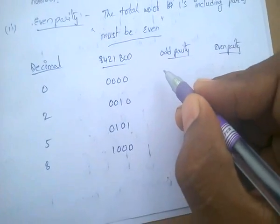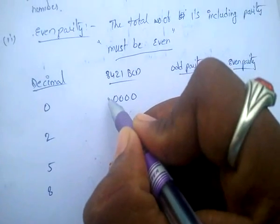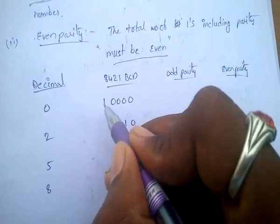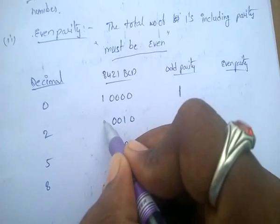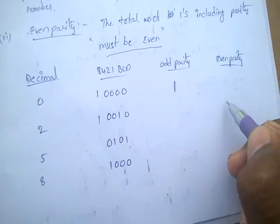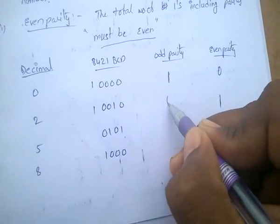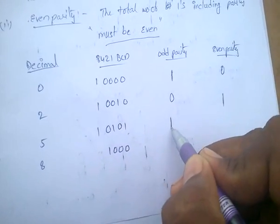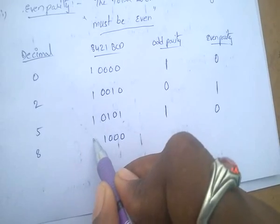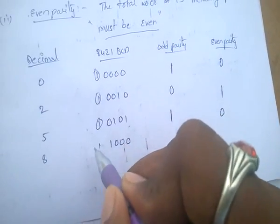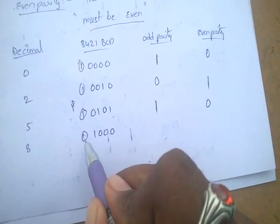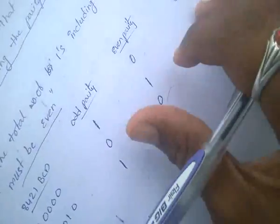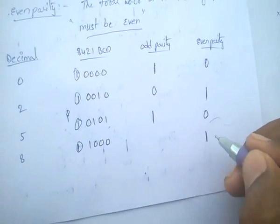For example, for 00: if we add parity as 1, the total number of 1s is only 1, which is odd, so it is odd parity. If we add 1 here, the total number of 1s is 2, which means even parity. If we add 1 as parity bit and the total number of 1s is 3, that means odd parity. If we add 1 and the total number of 1s is 2, that is even — even parity.